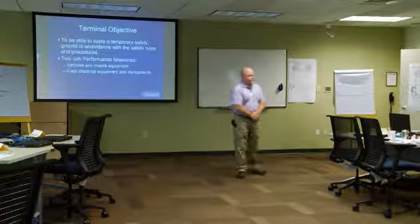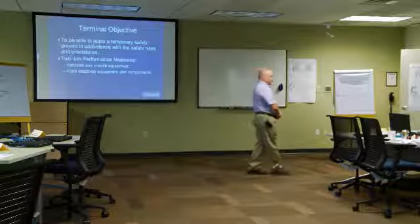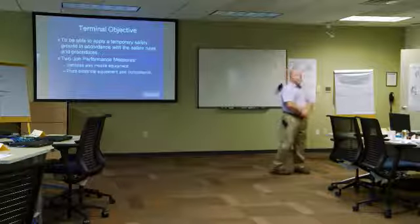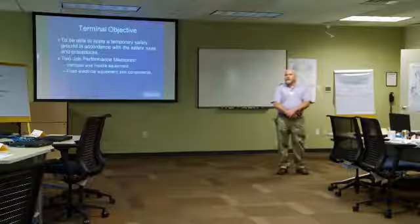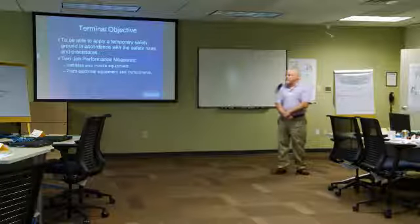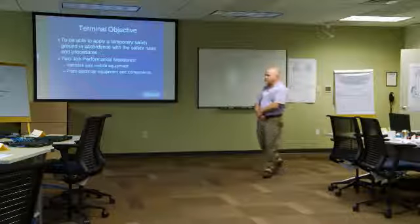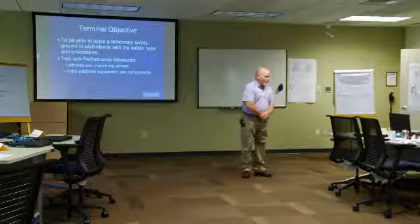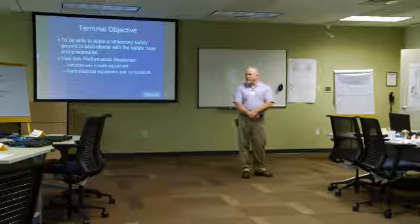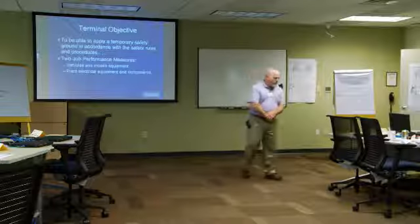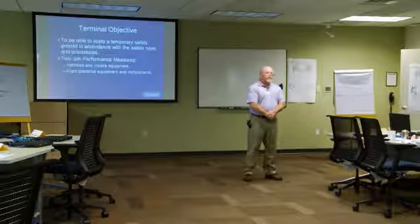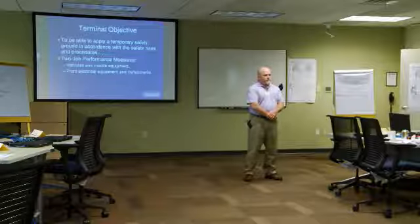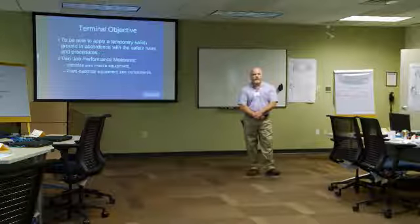Terminal objective. It's really pretty straightforward. At the end of the training, you will be able to install a temporary safety ground on any piece of equipment. We're going to measure your ability to do that by performing two JPMs, one on a piece of mobile equipment and one on a plant electrical equipment, maybe a transformer or some bus work or something like that.